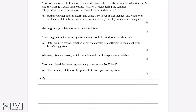Since this is hypothesis testing and we were asked to state our hypotheses clearly, we have to give a value for the null hypothesis and the alternative hypothesis. The null hypothesis is when the correlation is equal to zero — there's no correlation. The alternative hypothesis, which we write as H1, is when the correlation is negative, which is when rho is less than zero.